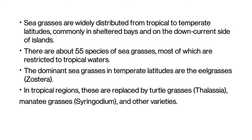Seagrasses are widely distributed from tropical to temperate latitudes, commonly in sheltered bays and on the downcurrent side of islands. There are about 55 species of seagrasses, most of which are restricted to tropical waters. The dominant seagrass in temperate latitudes are the eel grasses. In tropical regions, these are replaced by turtle grasses (Thalassia), manatee grasses (Syringodium), and other varieties.